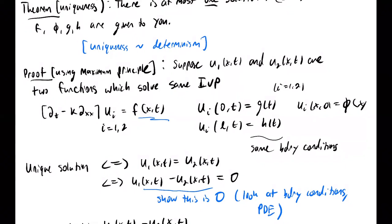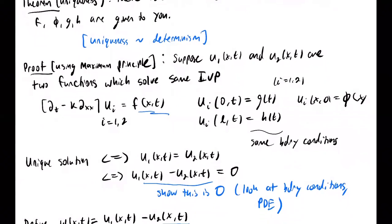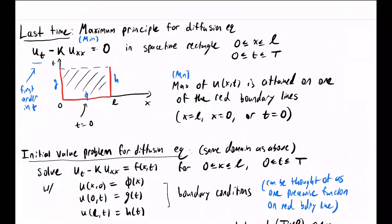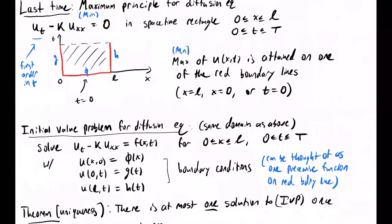Notice that the two key ingredients were: defining the function W, which exploits the linearity of the diffusion equation operator, and using the maximum principle. The maximum principle essentially shows that if you have zero boundary data — if your function is zero along all the red lines and also solves the diffusion equation — then the function has to be zero, which is what we showed.